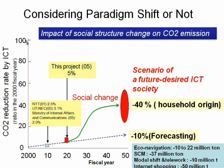As mentioned previously, the impact on CO2 emission based on uniform social change would be a 10 percent reduction. However, after considering the social change created by the ICT revolution, we found a 40 percent reduction in CO2 emission from household origin. This value means over 20 percent reduction of total CO2 emission in Japan.